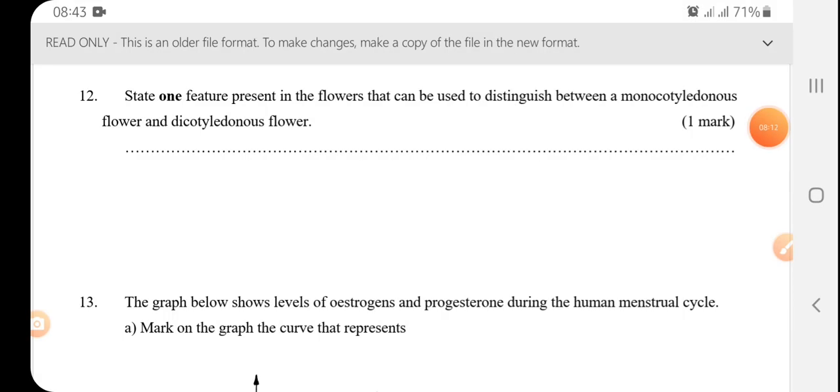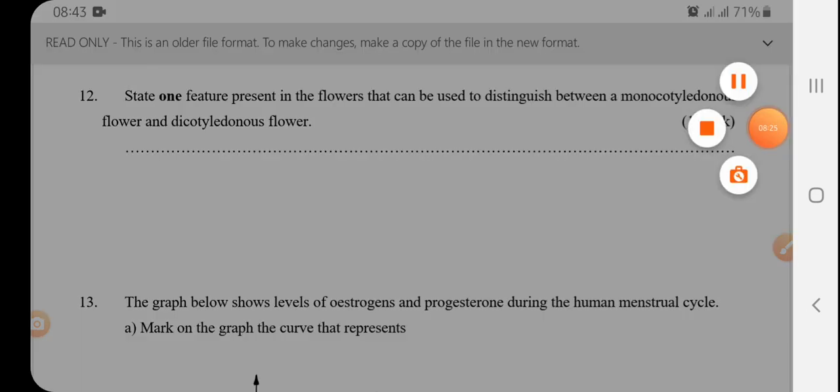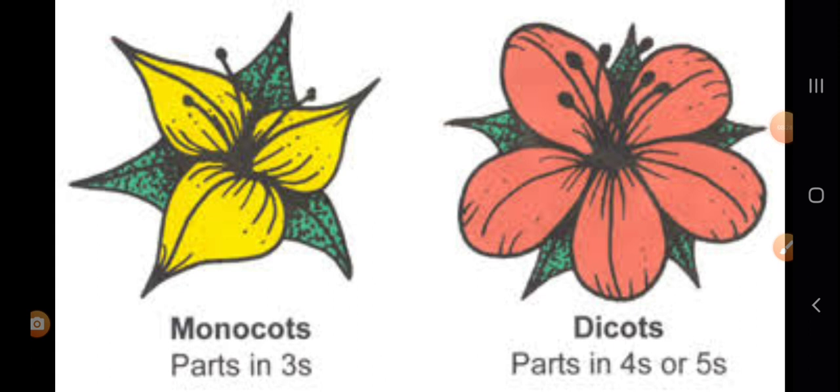State one feature present in the flowers that can be used to distinguish between monocotyledonous flower and dicotyledonous flower. So the monocots, the flower are in threes, while in dicots, they are in fours or fives or multiples of fives. And in monocots, it's either in threes or multiples of threes.